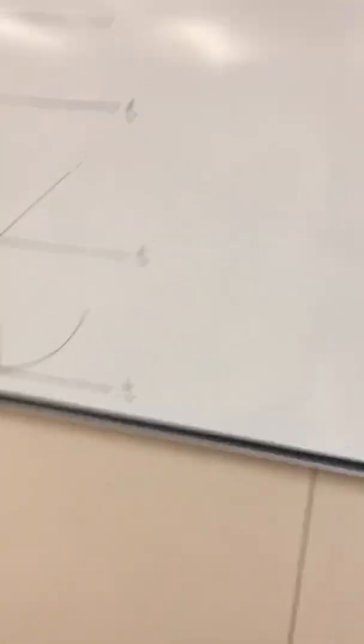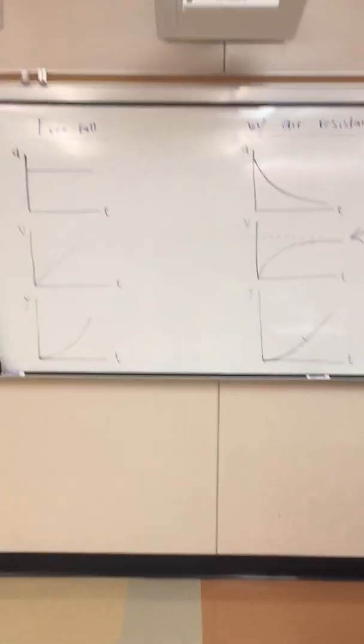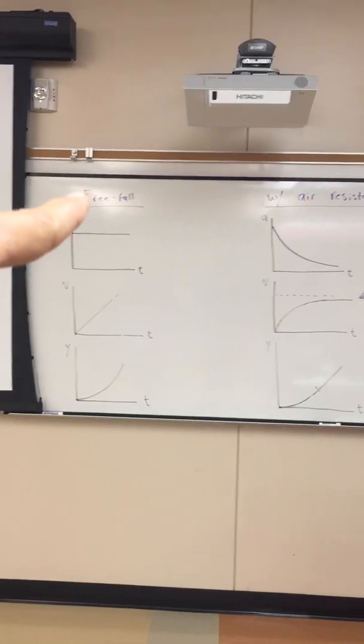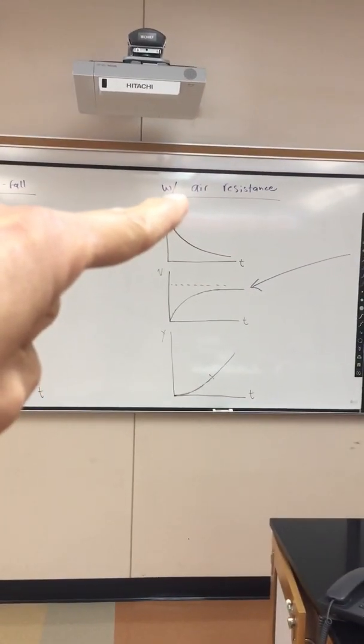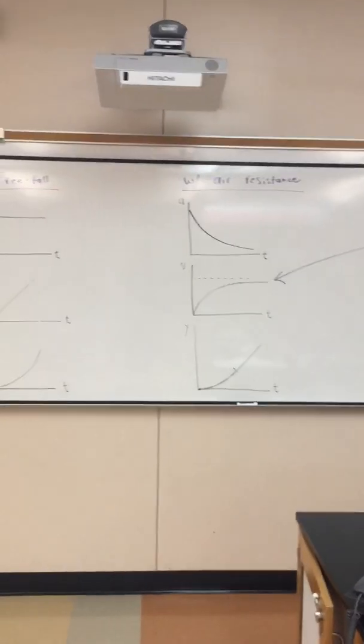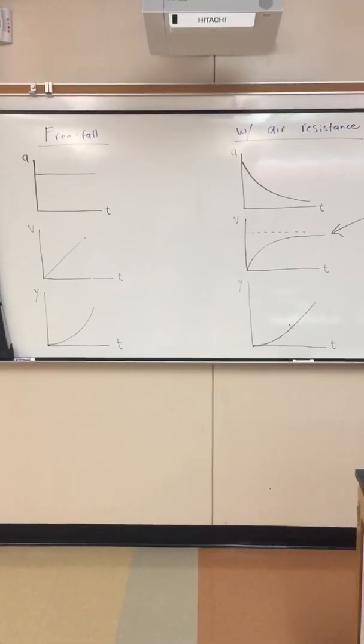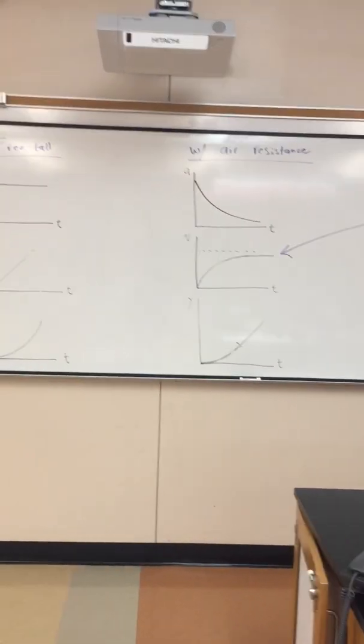So we can see by comparison graphs of acceleration, velocity, and time for objects in free fall versus objects under the influence of air resistance are quite different, and the differences are hopefully easy to explain.